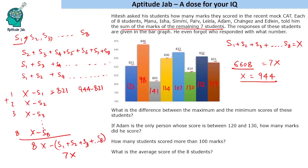The first question asks for the difference between the maximum and minimum scores. This could actually be answered directly from the bar graph without calculating individual scores — just take the difference between the biggest and smallest bar values. The difference is 43.